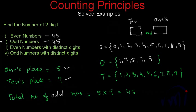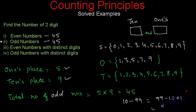We know that every alternate number is an even number and every alternate number is an odd number. From 10 to 99, total possible numbers are 99 minus 10 plus 1, that is 90. There are total 90 two-digit numbers, and half of them are even numbers and half are odd numbers. That is why we have 45 even numbers and 45 odd numbers.